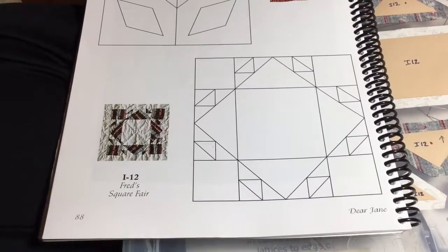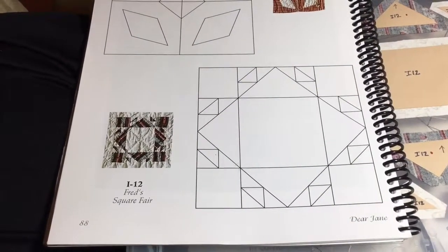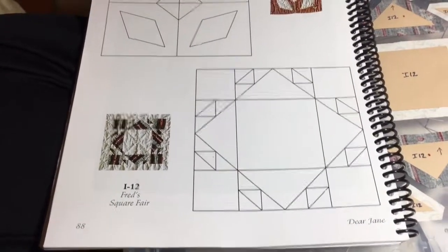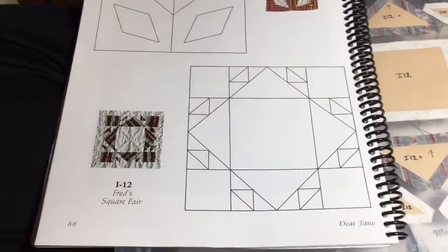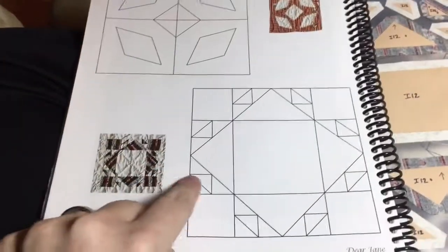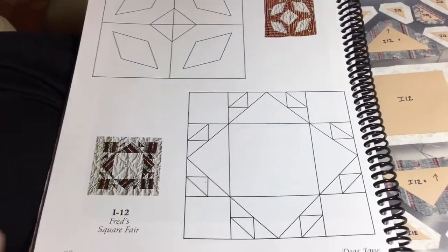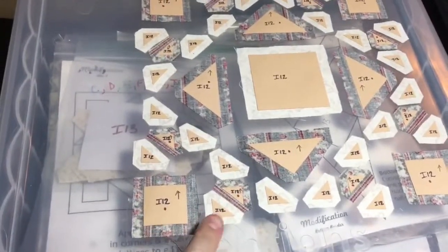So now I get to I-12, and I-12 is one of those blocks that I've been dreading because it has all these tiny pieces. Occasionally I get to have ones with big pieces, but I have to have all these little bitties. I have all my pieces laid out like usual, and there's 32 of these little tiny triangles.